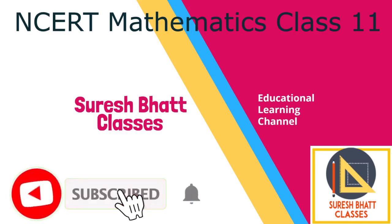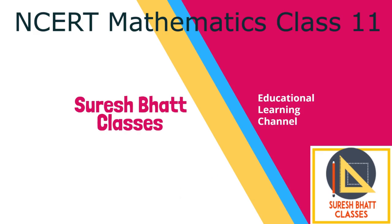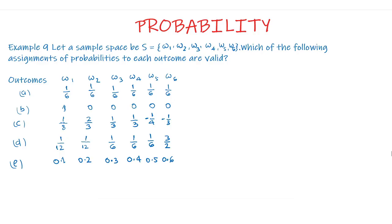Welcome to the educational channel of Suresh Bhatt Classes. We are going to solve probability, class 11th, chapter 16, example 9 of NCERT. Let a sample space be S equal to {ω1, ω2, ω3, ω4, ω5, ω6}. Which of the following assignments of probabilities to each outcome are valid?